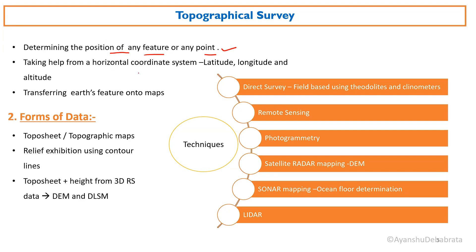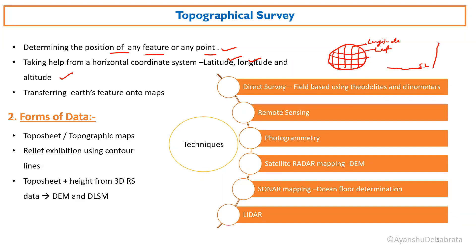To determine position, we need latitude, longitude, and altitude. Altitude means height — for example, if this is sea level and one mountain is here, this is the altitude. The forms of data generated from topographical survey are presented in different forms: one is topographic maps, which we will study in detail. The other two — digital elevation model and digital surface model — you will study in the remote sensing part.